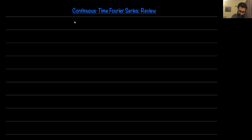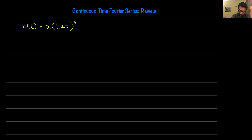Let's consider a periodic signal X of T, which is periodic with a period T. That means X(T) equals X(T + capital T), where capital T is the period, and this condition is satisfied for all T belonging to the real set. Corresponding to this period, there's a frequency in radians per second: omega naught, which is two pi divided by T.